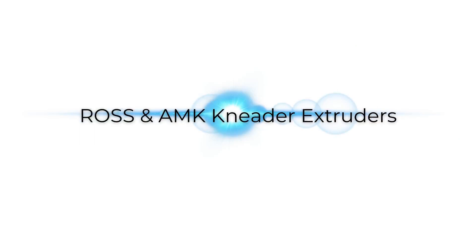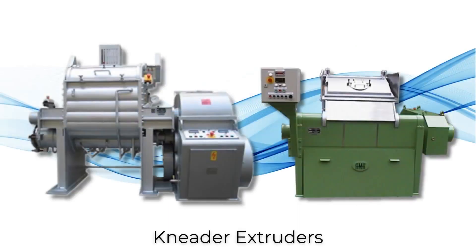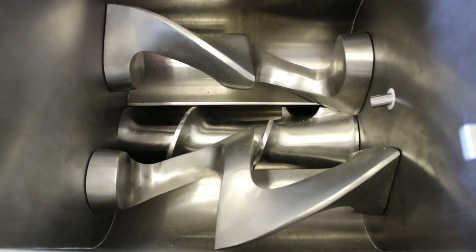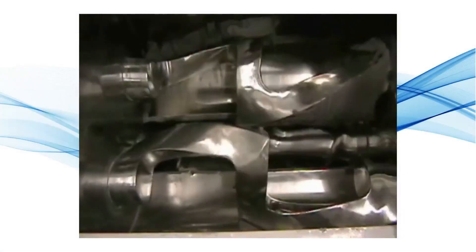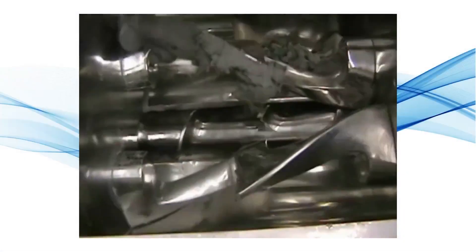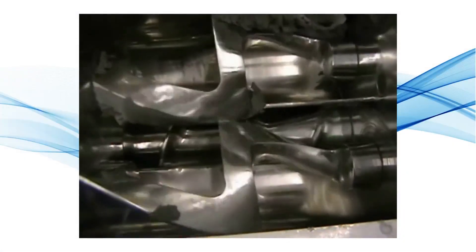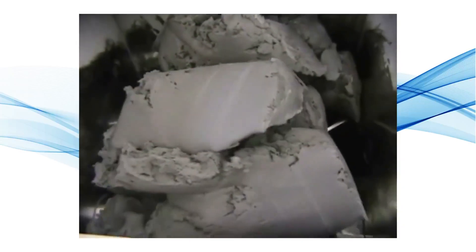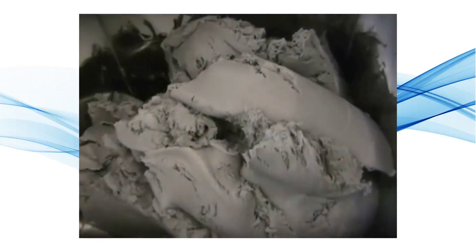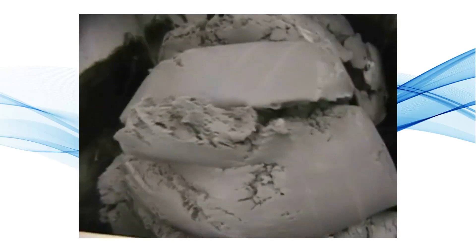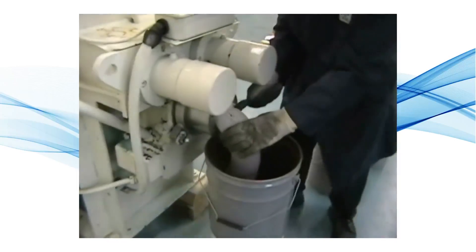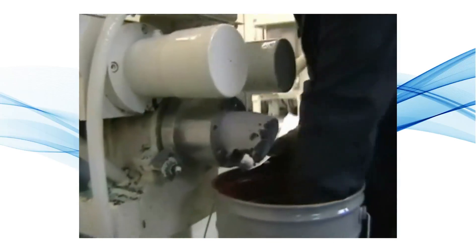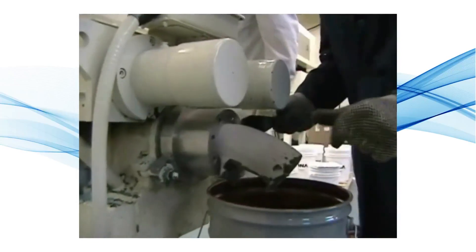Kneader extruders are a reliable and versatile solution for the efficient mixing and discharging of high viscosity materials. Equipped with counter-rotating kneading blades and a discharge screw, the kneader extruder operates in a horizontal trough. As the blades rotate toward each other, the mixing process continuously introduces fresh materials. Once the mixing and kneading cycle is complete, the screw reverses direction, allowing the finished product to be extruded through a discharge die.